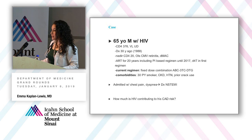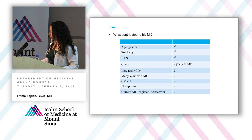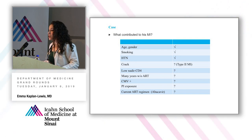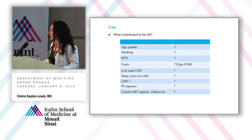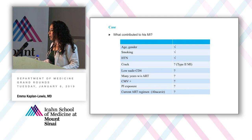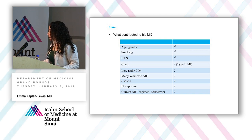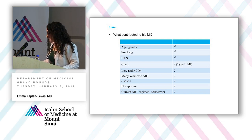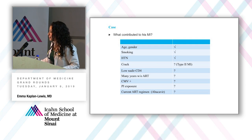So how much is HIV contributing to this gentleman's coronary risk? Age, gender, active smoking, and hypertension certainly play a role. If he relapsed on crack cocaine, he could be at risk for a type 2 myocardial infarction — vasospasm rather than plaque rupture. Low nadir CD4 indicates prolonged viral replication before treatment and correlates with more immune dysregulation. He had about a decade without antiretroviral therapy. CMV, somewhat controversial, is also an immunomodulatory pro-inflammatory virus. The protease inhibitor exposure and possibly his current ART regimen, which includes abacavir, are also contributing factors.